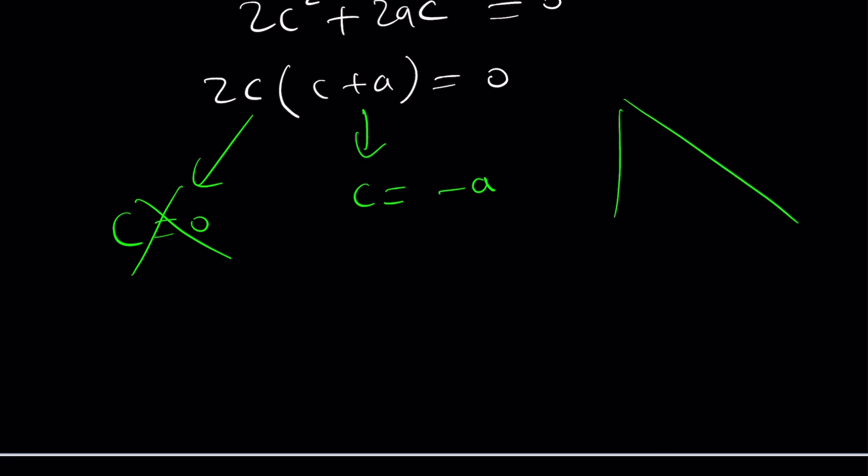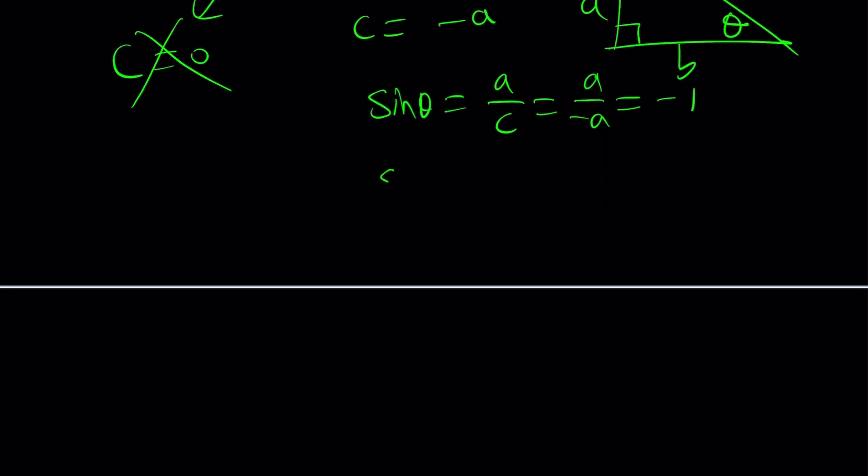What about this one? That means c plus a or a plus c is equal to 0 or c equals negative a. Is that acceptable? Let's find out. Redraw the triangle, a, b, c. And this is my theta. So notice that sine theta is a over c. If c is negative a, this is a over negative a, which is negative 1. So what? Well, if sine theta is negative 1, think about the unit circle.